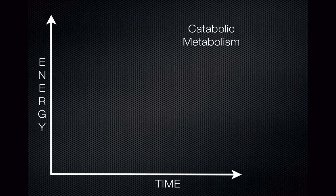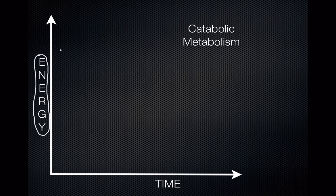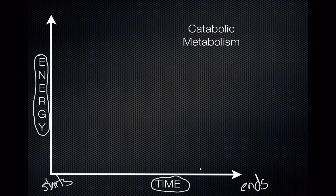A good way to look at metabolic pathways is by using something called an energy graph. These energy graphs are always set up the same way. The y-axis is always going to be about the amount of energy, so as you move upward on the graph you increase the amount of energy something has. And time is always going to be on the x-axis — it's the timing of the chemical reaction, from where the reaction starts to where the reaction ends.